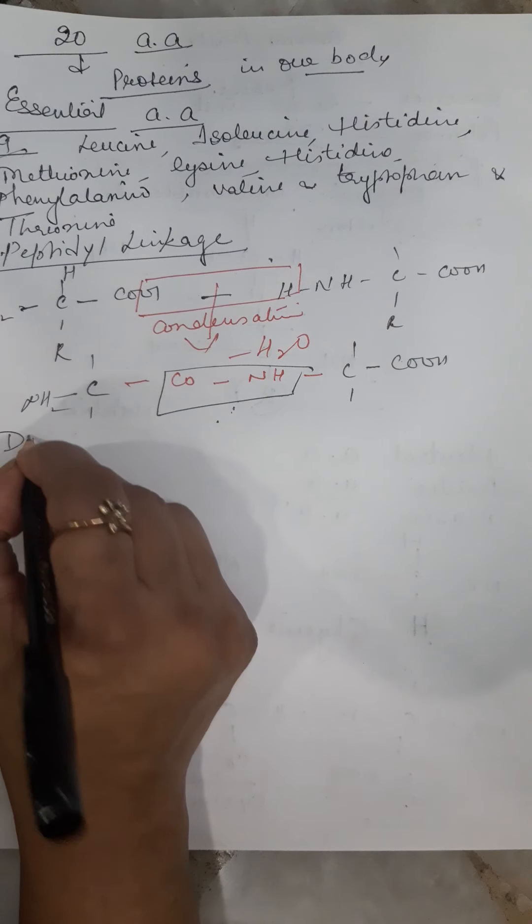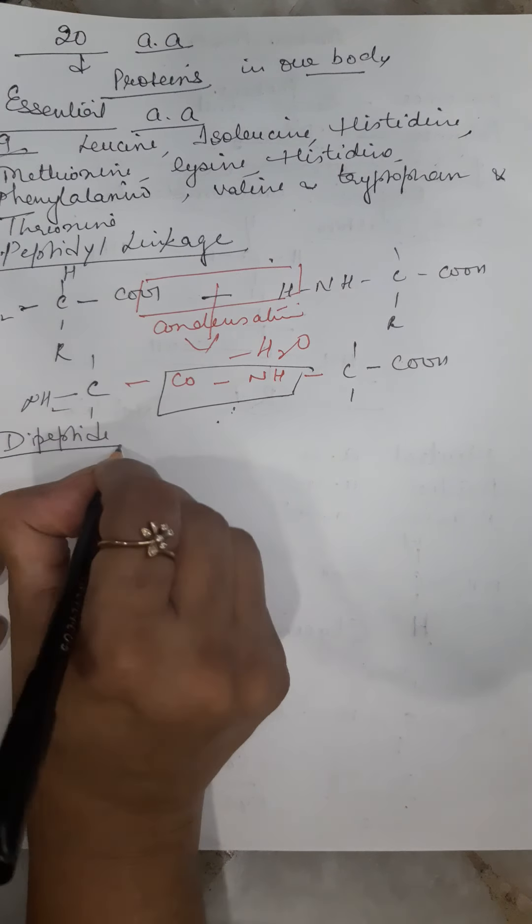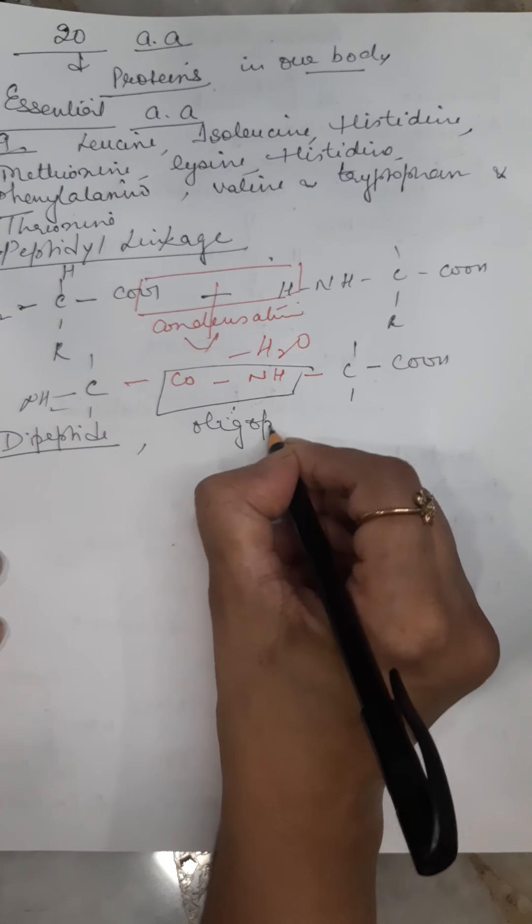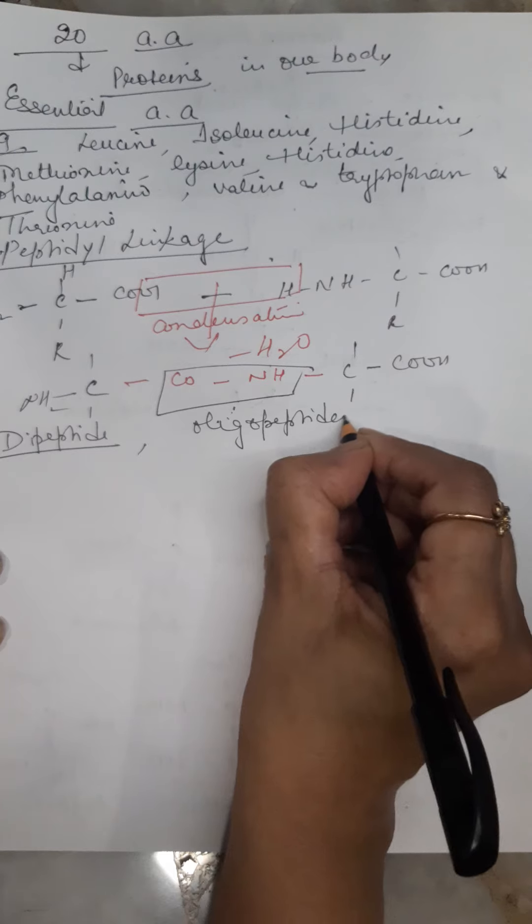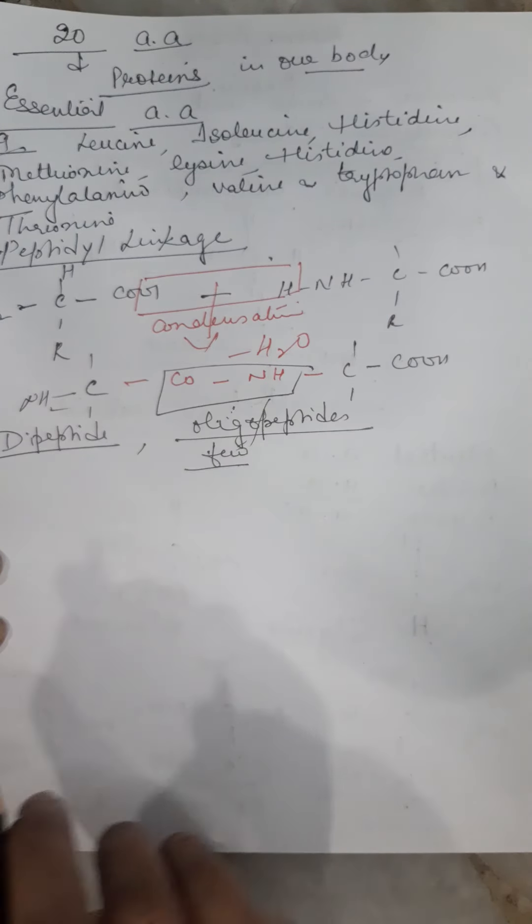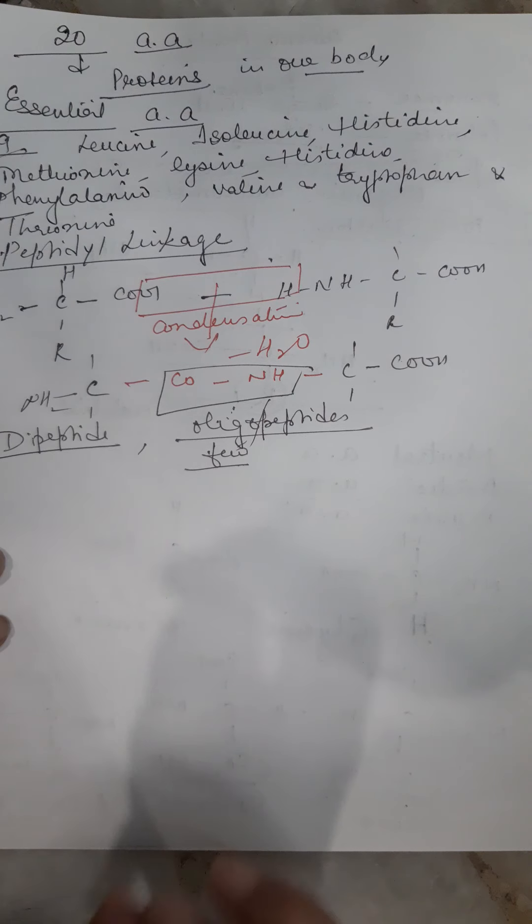By this peptidyl linkage, they may form dipeptide having 2 amino acids, or oligopeptides. Oligo means few amino acids, though simply we say peptide.